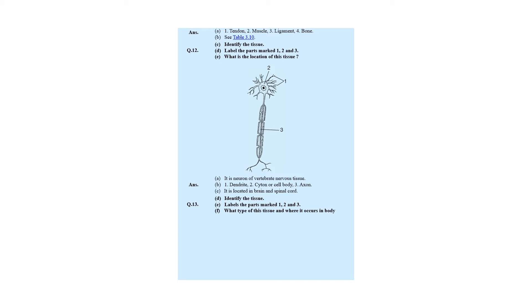Question 12: observe the diagram of a neuron or nervous tissue and label the parts. First — dendrite, second — cytone or cell body, third — axon. It is mainly located in the brain and spinal cord, but actually it is present throughout the whole nervous system.